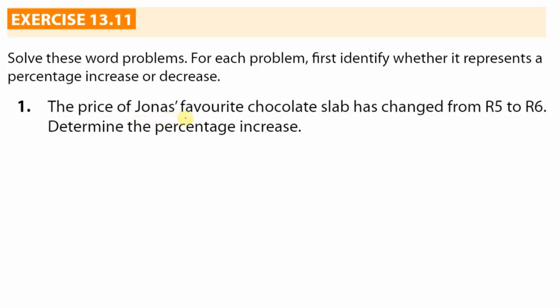Number one: the price of Jonah's favorite chocolate slab has changed from five rand to six rand, determine the percentage increase. So it's often easiest to draw a time diagram. Basically we have the old and we have the new. So what was the old price? It was five rand and then it changed to the new price which is six rand.